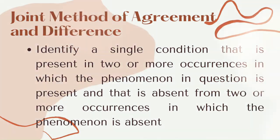The third method is the Joint Method of Agreement and Difference. It identifies a single condition that is present in two or more occurrences in which the phenomenon is present, and absent in occurrences where the phenomenon is absent.